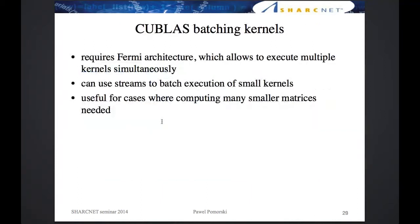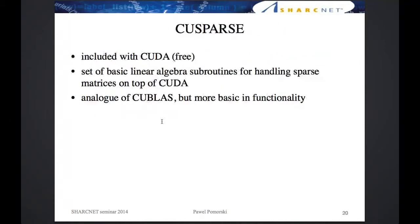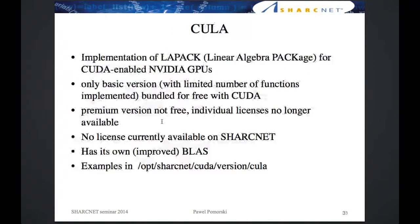What if you're dealing with small matrices? If you have just one small matrix, you will not be able to take advantage of the GPU. But if you have many small matrices, you can use cuBLAS batching — you can send multiple kernels to the GPU simultaneously. I also briefly mention cuSparse, which is a sparse matrix version of these operations, also included with CUDA.